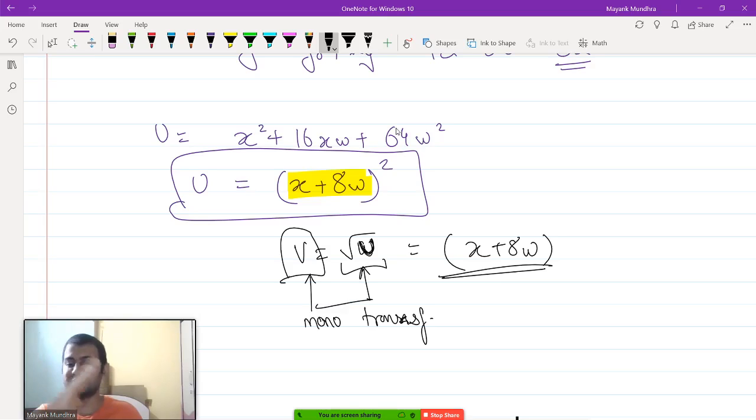So, they both basically represent the same preferences. So, whatever indifference curves x + 8w has, the same indifference curves will be for (x + 8w)².